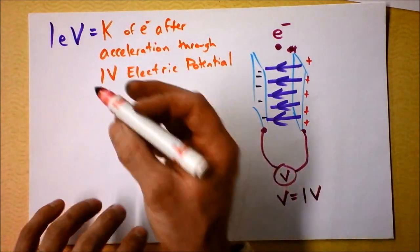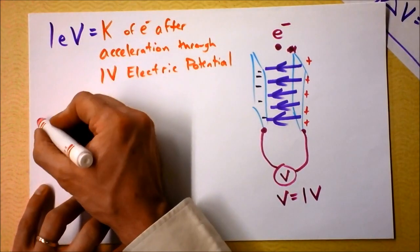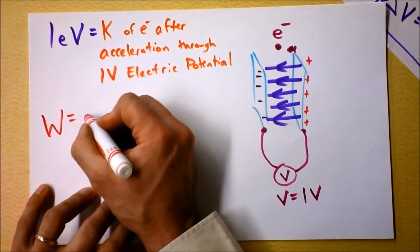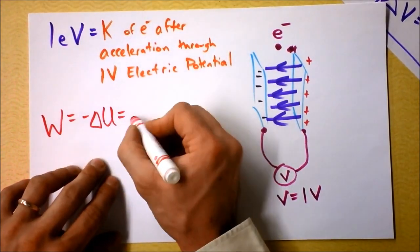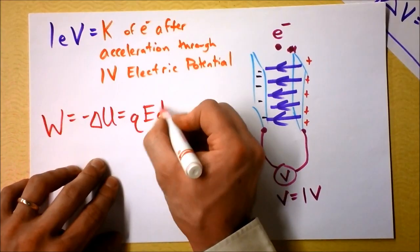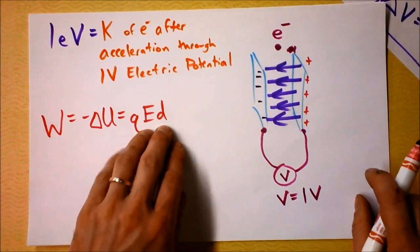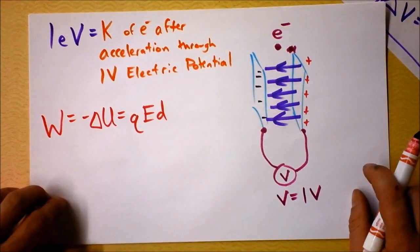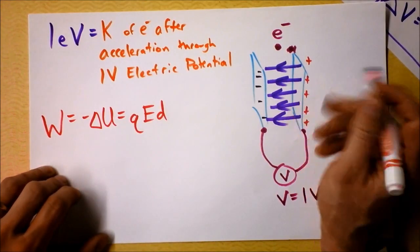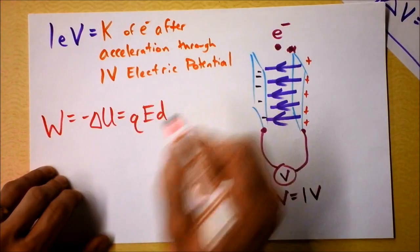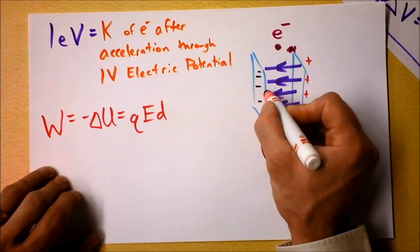Since the electron gained kinetic energy, it must have lost potential energy. Going from one plate to the other causes it to lose potential and gain kinetic energy, conserving total energy. We can calculate how much an electron volt is: work equals negative change in energy, and work was Q times E times D.